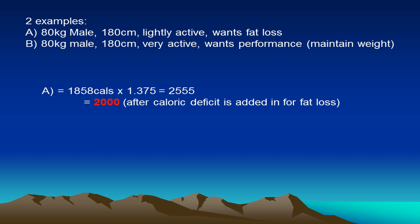Let's do these equations. Person A: if we do that calculation from the previous slide, it comes out to 1,858 calories basal. Now if we said they were lightly active — not sedentary but lightly active — that was multiplying by 1.375, giving us the figure for daily calories required to maintain weight at their activity levels. If we take into account that they want fat loss, and we're looking at around 500 calories deficit daily, we're looking at around about 2,000 calories as a rounded figure.